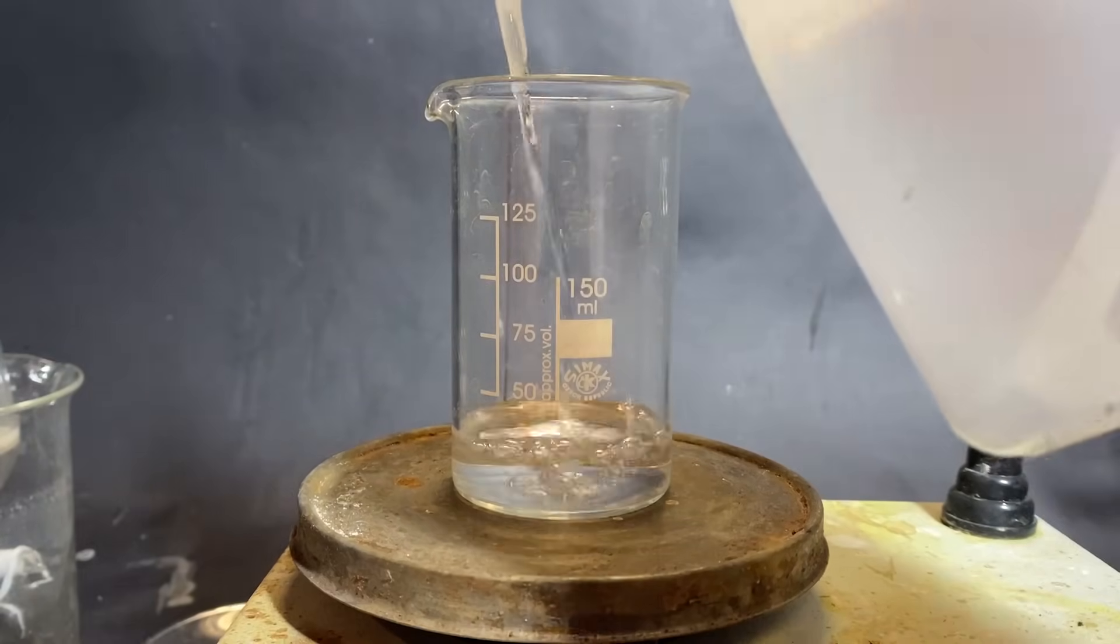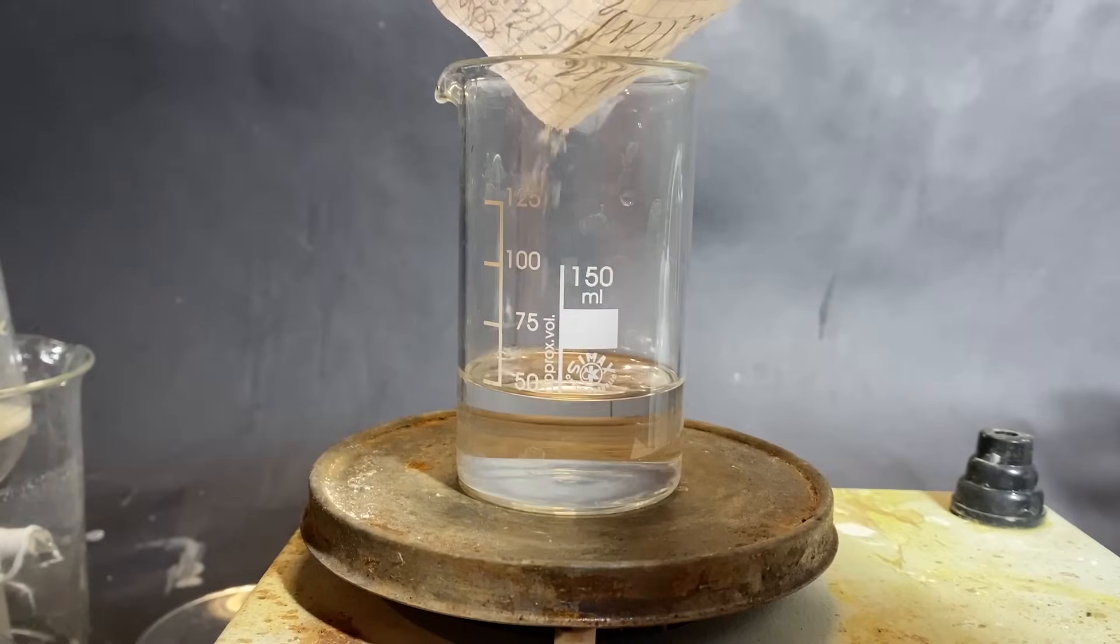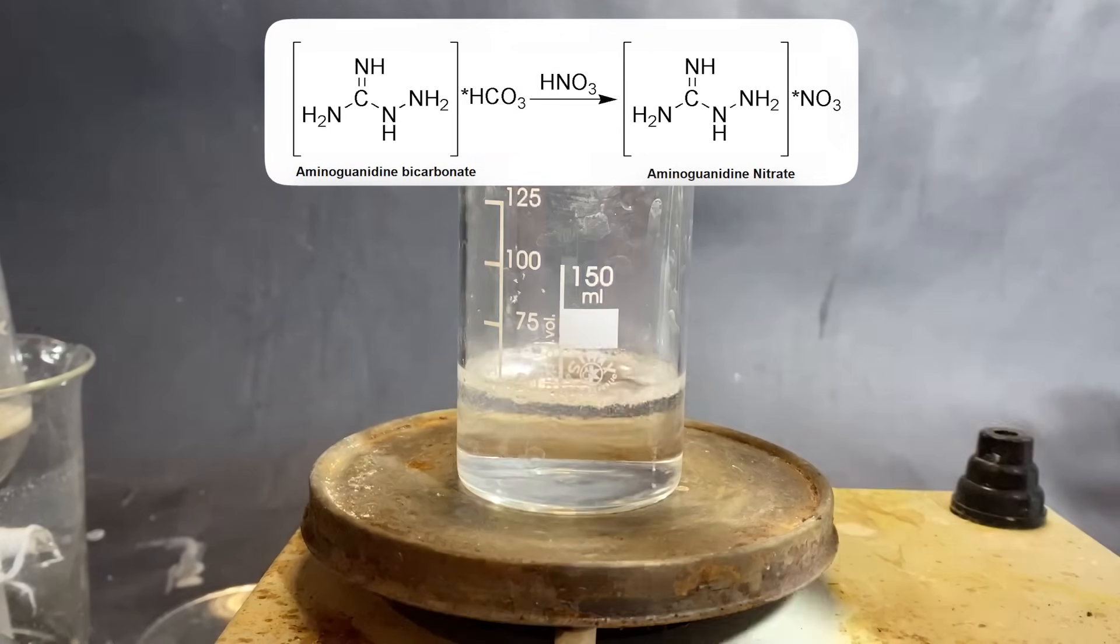Alright, so first I made a weak nitric acid solution by adding some fuming nitric acid into some water. Then I dissolved all the aminoguanidine bicarbonate in it. The bubbling is from the bicarbonate ion reacting with the acid to form CO2.